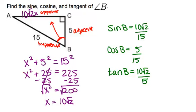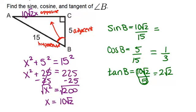In each of these cases, we can simplify the fractions. Working backwards: 10 divided by 5 is 2, so the tangent simplifies to 2 root 2. For cosine, 5 over 15 divided by 5 reduces to 1 third. And 10 root 2 over 15, dividing both by 5, gives 2 root 2 over 3.